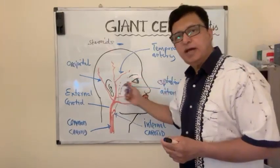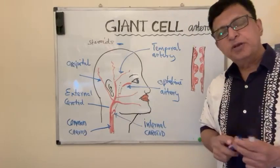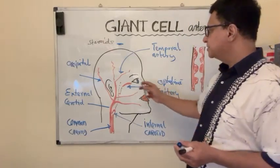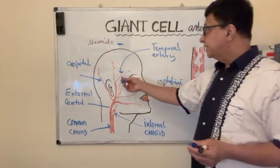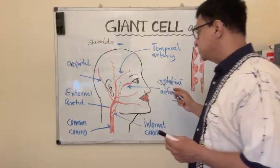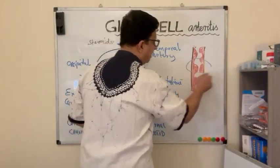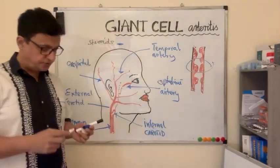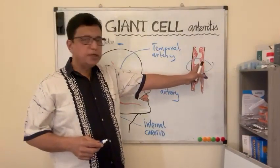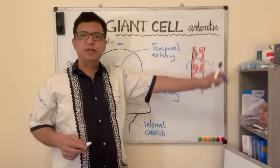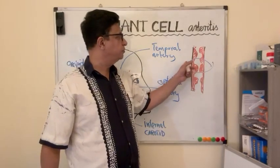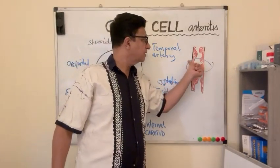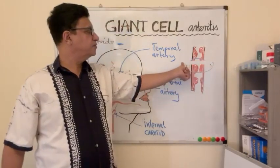In usual practice, what we do is we start 40 to 60 milligram prednisolone immediately once daily dose, and then proceed with other investigations. What are the other investigations we have to do? Yes, temporal artery biopsy is the gold standard. We have to get a piece of temporal artery and look into it to see the granulomatous changes.